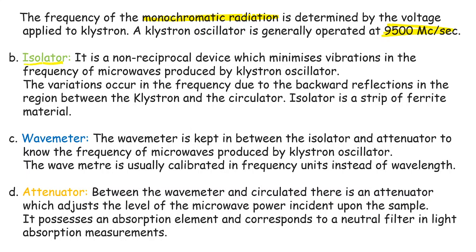The next part of the source is the isolator. The isolator is a non-reciprocal device which minimizes vibrations in the frequency of microwaves produced by the klystron oscillator. Variations in frequency occur due to backward reflections in the region between the klystron and the circulator. The isolator is essentially a ferrite strip that absorbs these backward reflections and stabilizes the microwave frequency.